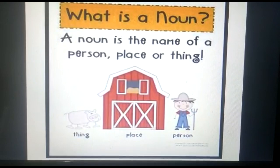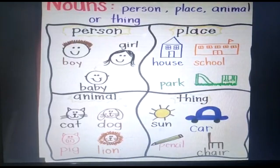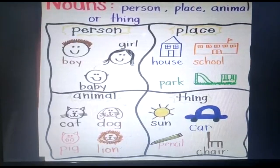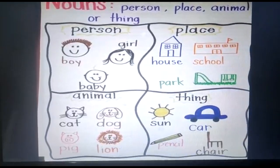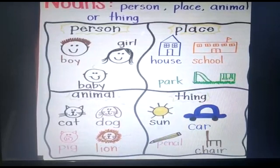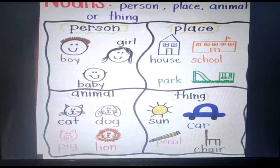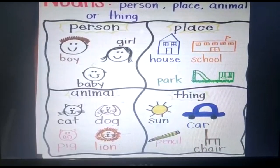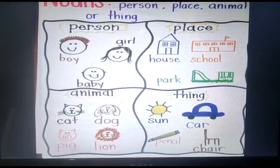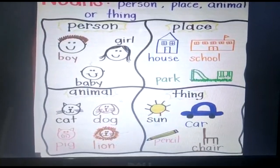For example, persons like boy, girl, baby. Places like house, school, park.